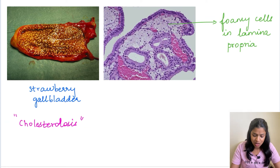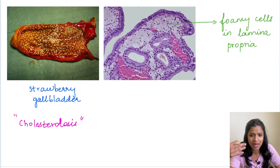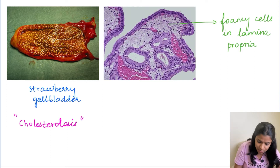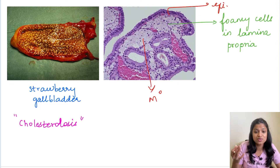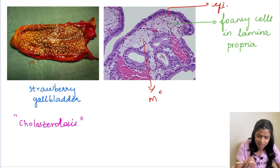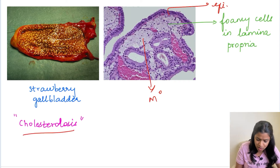Moving on to cholesterolosis, a condition called the strawberry gallbladder. In this condition excess cholesterol is taken up by foamy macrophages and deposited in the lamina propria, just beneath the gallbladder epithelium. Grossly it looks like a strawberry — the red congested mucosa alternating with yellow dots, which are the cholesterol deposits. This characteristic appearance is cholesterolosis.